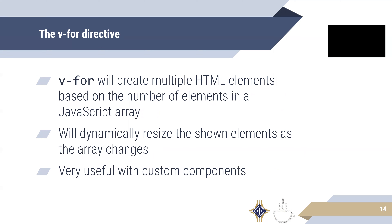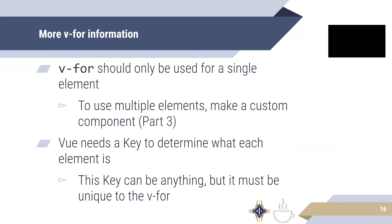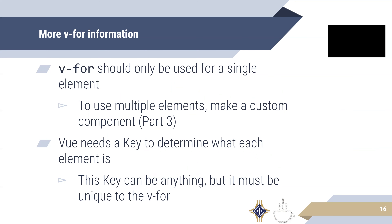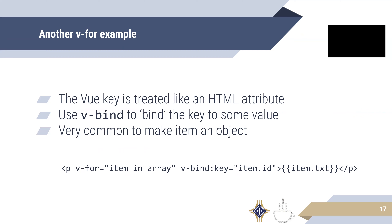Now let's get into the new stuff. The last key directive is V-For. V-For creates multiple HTML elements based on the elements in a JavaScript array. It's useful for iterating over every element, and it needs a key for every one of the elements in the list. In this syntax example, we have a list called 'array', V-For cycles through it, and VBind gives each item a key.